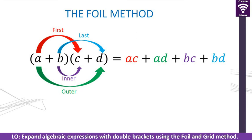We will start looking at the FOIL method. FOIL is short for First, Outer, Inner, and Last. We do our multiplications in order: you multiply A by C — whatever terms are located at positions A and C are what you first multiply. So A times C gives us AC. Then the Outer, which is A times D, gives us AD.